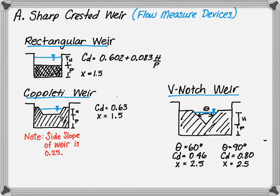The next type of sharp-crested weir is a V-notch weir. The V-notch weir can come in various angles. We can have a 60 degree and a 90 degree. For a 60 degree weir, the coefficient of discharge is 0.46 with an X of 2.5.